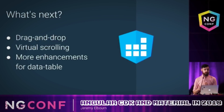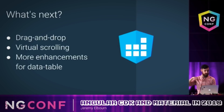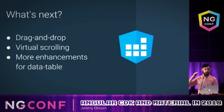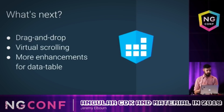One of the big things we're doing going forward is drag and drop in the CDK. This will be low-level primitives so that you can do drag and drop in your own components. We'll then use that drag and drop code in Angular Material for things like movable dialogs and reorderable lists. We're also working on virtual scrolling in the CDK so that you can render large sets of data but only actually render what appears in the viewport, and we'll be using that in Angular Material components like the select, autocomplete, and the data table.